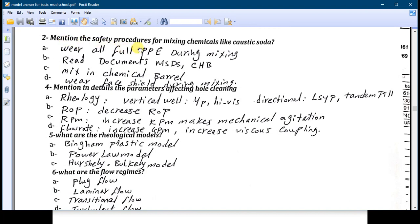Number two: mention the safety procedures for mixing chemicals like caustic soda. Number A: you have to wear all the full personal protective equipment during mixing. This is very important. Number two: you have to read all the documents like MSDS and CHP, material safety data sheet.